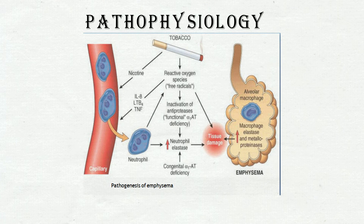Pathophysiology. Due to tobacco intake, the release of nicotine in the blood increases the neutrophils, which leads to increasing neutrophil elastase, which breaks the elastic fibers in the alveoli, thus causing tissue damage. Tobacco also induces reactive oxygen species, which release interleukin, leukotriene B4, and tumor necrosis factors, which increase neutrophil numbers and lead to the release of neutrophil elastase, causing tissue damage. Activation of reactive oxygen species and free radicals increases the inactivation of anti-proteases.